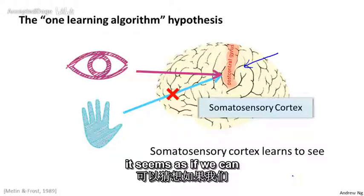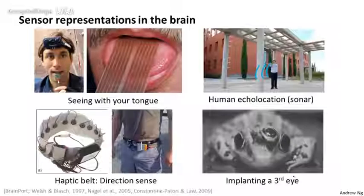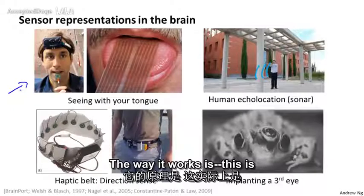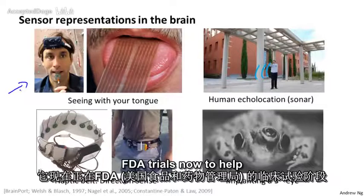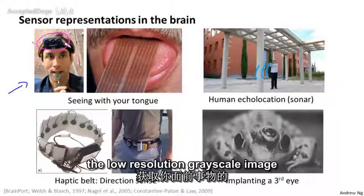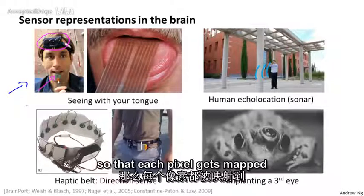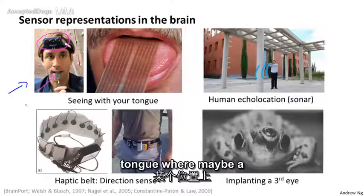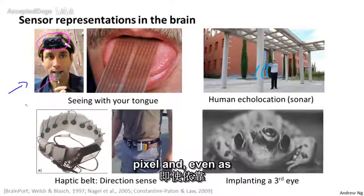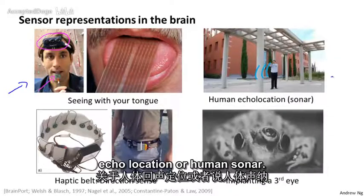To a surprisingly large extent, it seems as if you can plug in almost any sensor to almost any part of the brain, and within reason the brain will learn to deal with it. On the upper left is an example of learning to see with your tongue. This is actually a system called BrainPort, undergoing FDA trials to help blind people see. You strap a grayscale camera to your forehead, run a wire to an array of electrodes on your tongue, and each pixel gets mapped to a location on your tongue. Even as adults, you can learn to see in tens of minutes with your tongue. Here's a second example of human echolocation or human sonar.